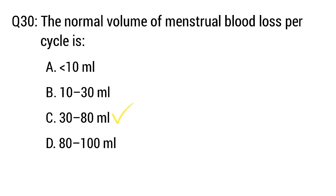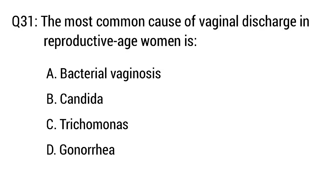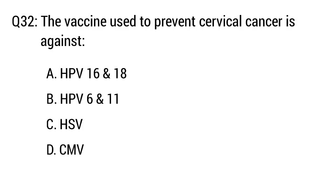Question number 31. The most common cause of vaginal discharge in a reproductive age woman is — the right option is option A: Bacterial vaginosis.